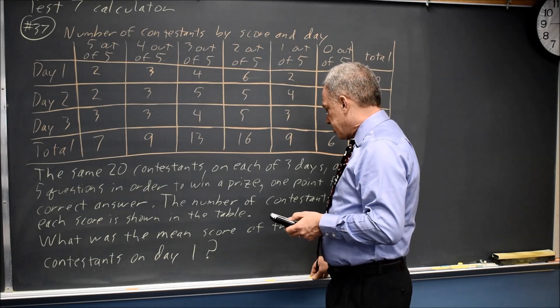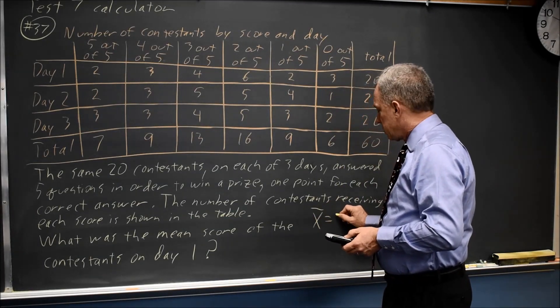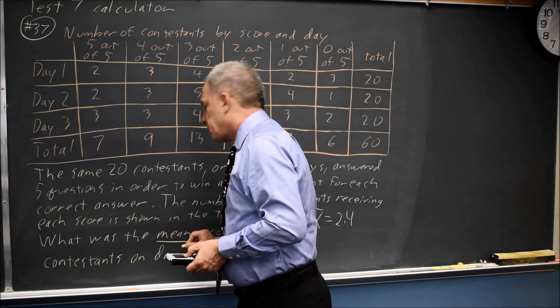And the calculator shows x bar, which is the mean, equals 2.4. And they were asking for the mean score, not the median.